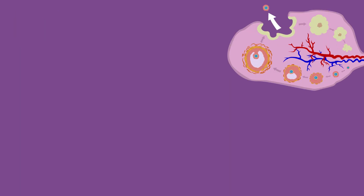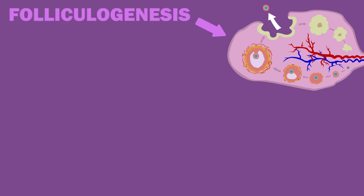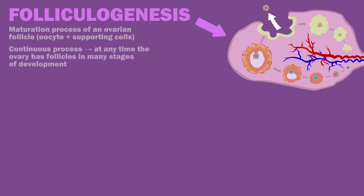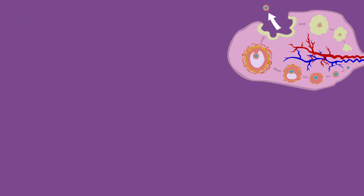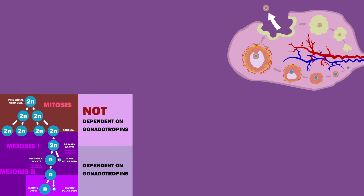Folliculogenesis is the maturation process of an ovarian follicle, a structure containing the oocyte and its supporting cells. A woman is born with all her primary oocytes, and those not developing are called primordial follicles. Development of these primordial follicles into mature follicles is a continuous process, and at any time the ovary has follicles in many stages of development. The complete folliculogenesis process for a follicle can take almost a year, and the vast majority of follicles die before completing development. The initial development of follicles is not dependent on gonadotropins, so it can occur at any point during the woman's cycle.